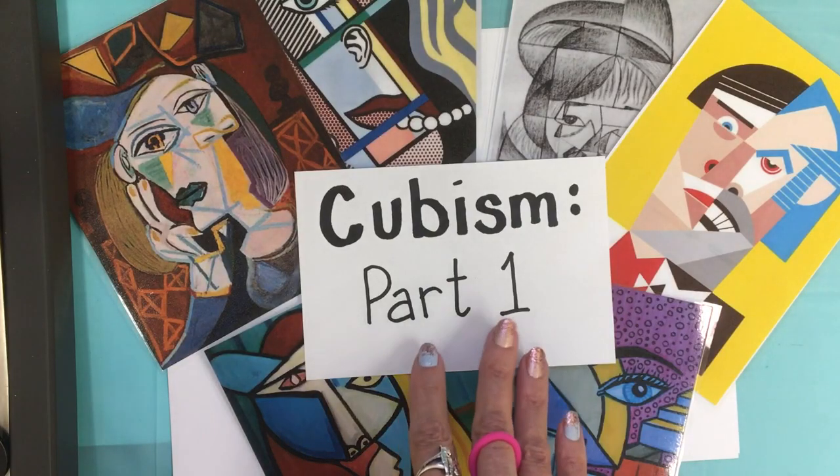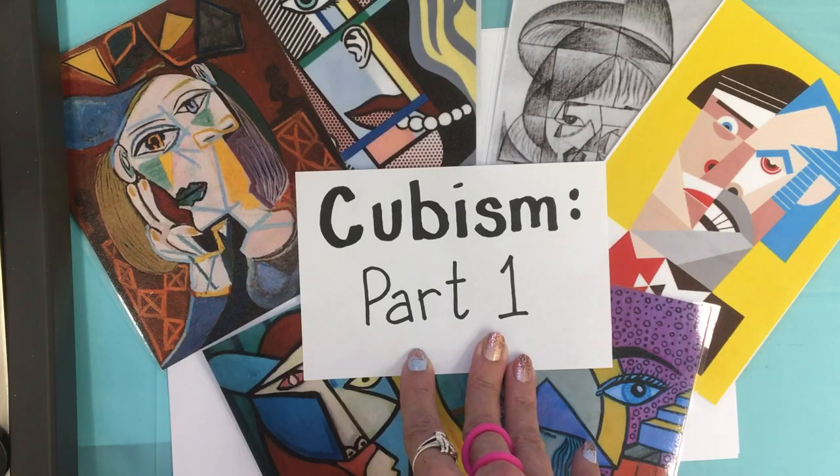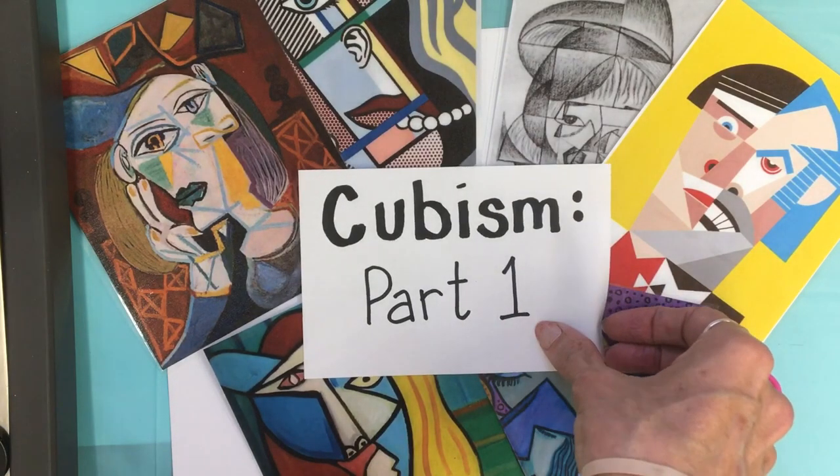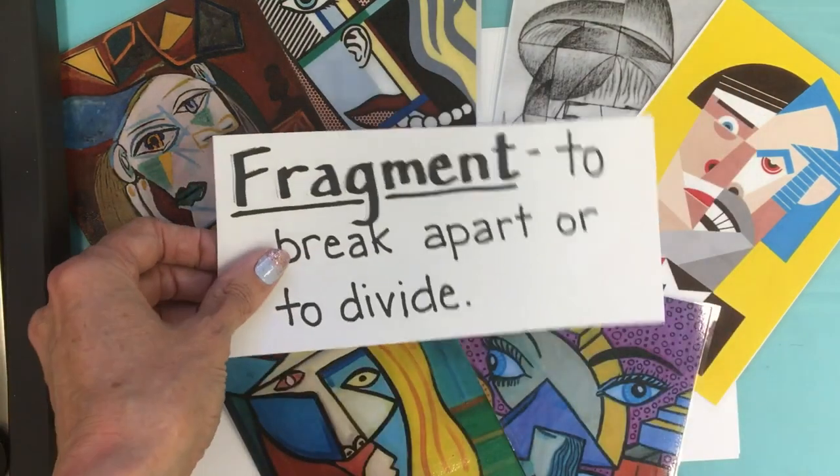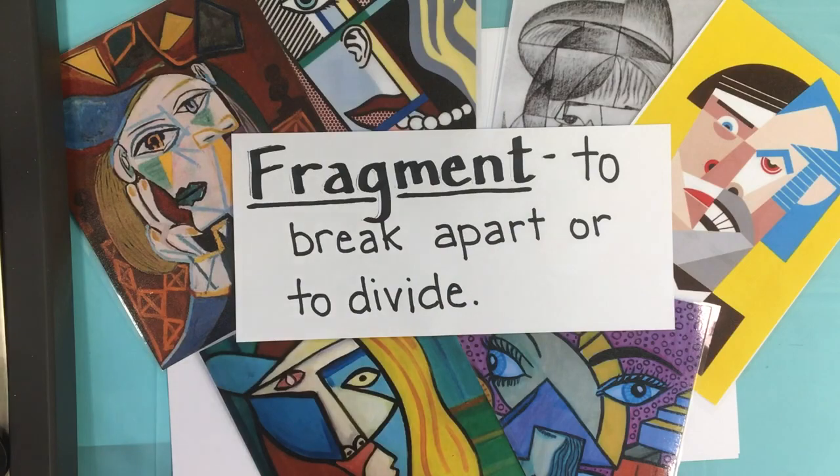This week is part one of our cubism drawing. This week what we are working to do with cubism is we are working simply to fragment our paper before we start our drawing.